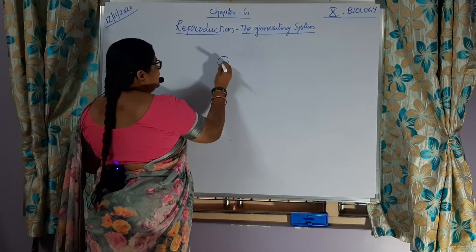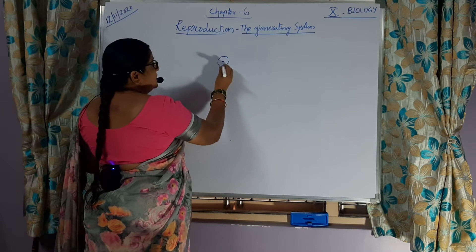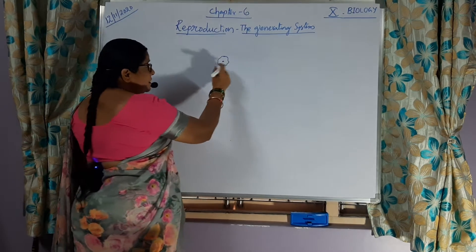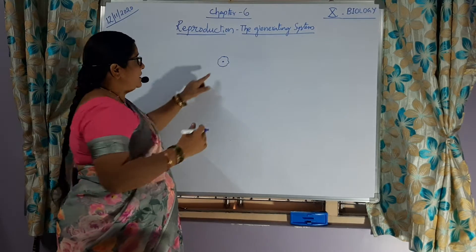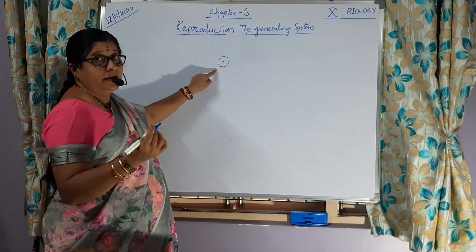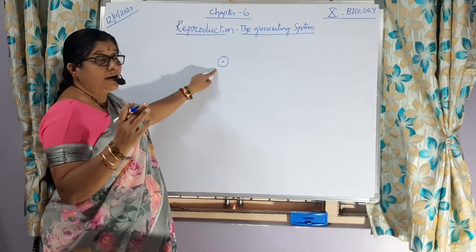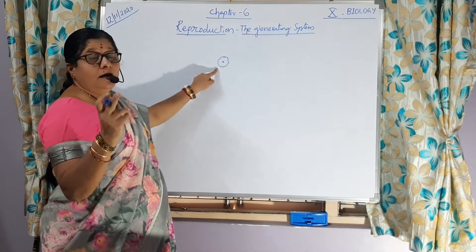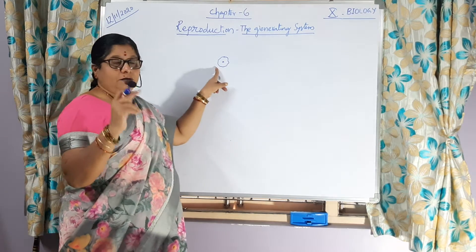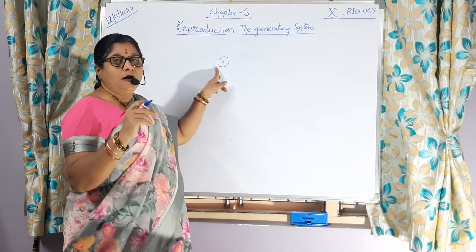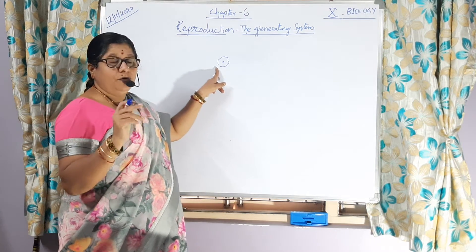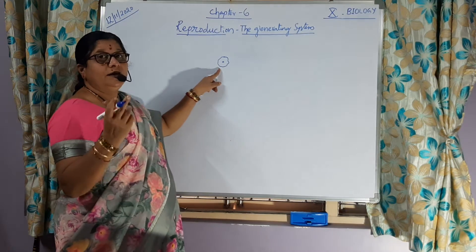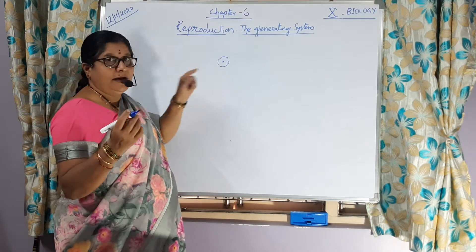It will be there like this. When it is ready to germinate, you know that the pollen grain, when it reaches the stigma of the ovary — that is stigma of gynoecium — then only it starts germinating.